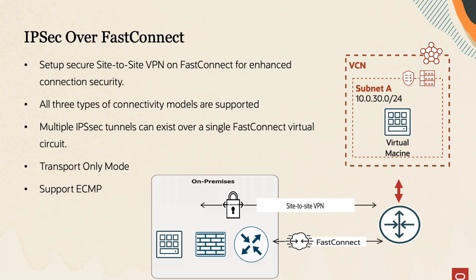Tunnel endpoints can have either public or private IP addresses. One thing to note is that if you use public addresses on the IPsec tunnel endpoint, they won't be accessible over the internet, as they will only be advertised over the FastConnect. ECMP is also supported and allows aggregation of multiple tunnels between the endpoints.